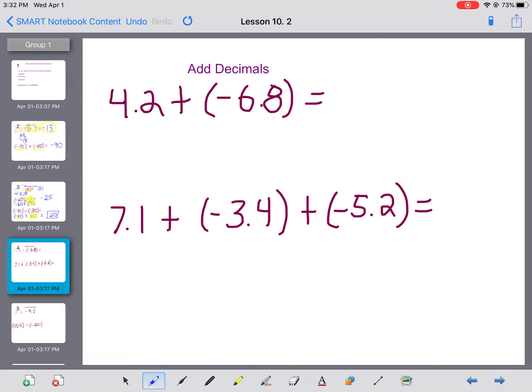Don't worry, we'll keep using integers when we review how to work with decimals. So here we have 4.2 plus negative 6.8. So don't be freaked out just because we're including decimals and integers. We're just going to combine what we just reviewed. So again, I can find the difference between these two numbers because one's positive and one's negative.